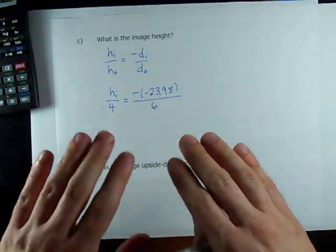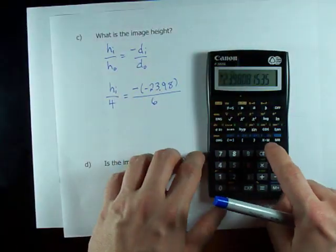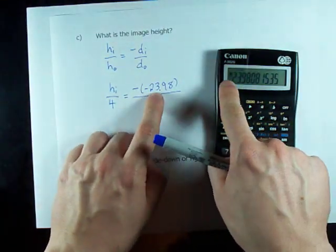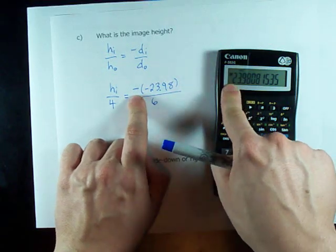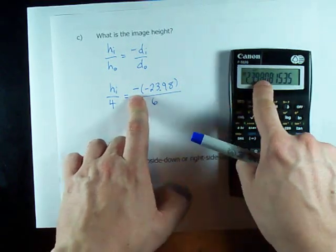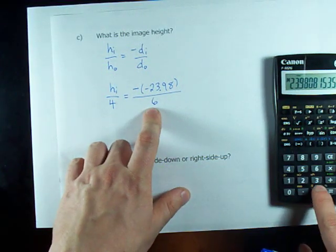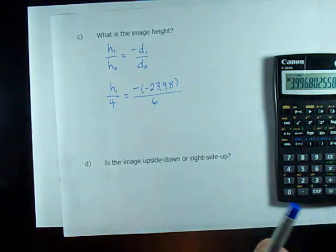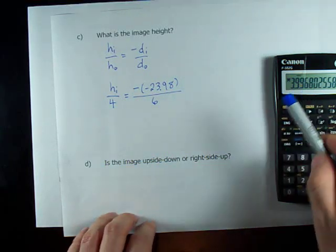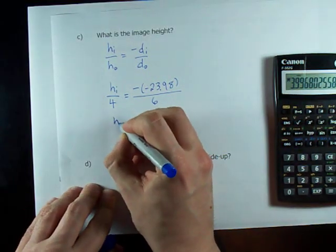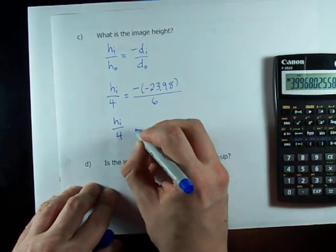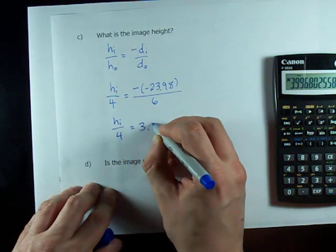Now, we need to get some numbers here. We've got 23.98 negative. I have to negative that. Oh, look, it became positive. I don't know if you can see that on my calculator. It's positive now. And I have to divide it by 6. That gives me 3.996.